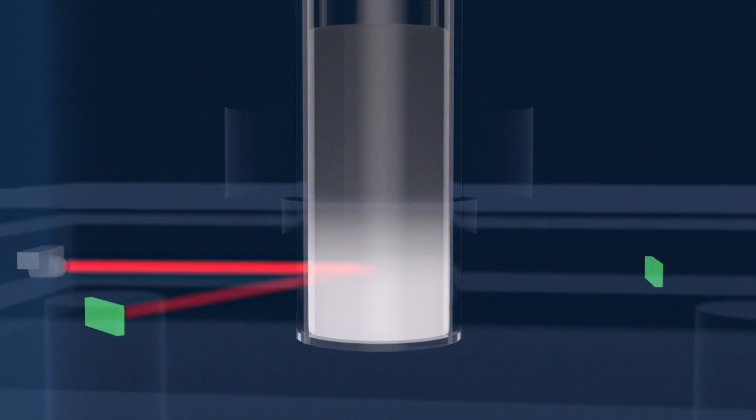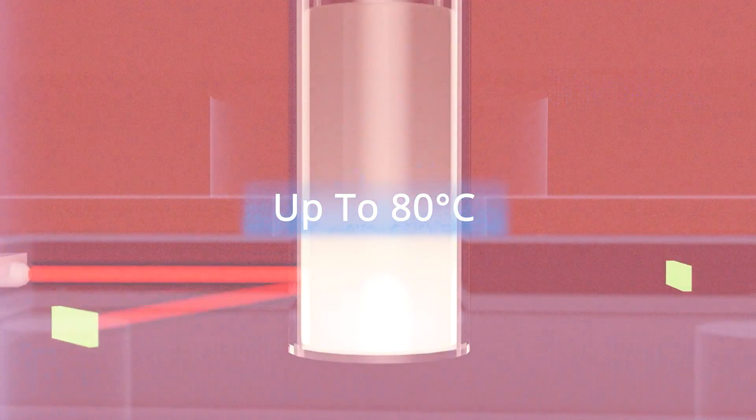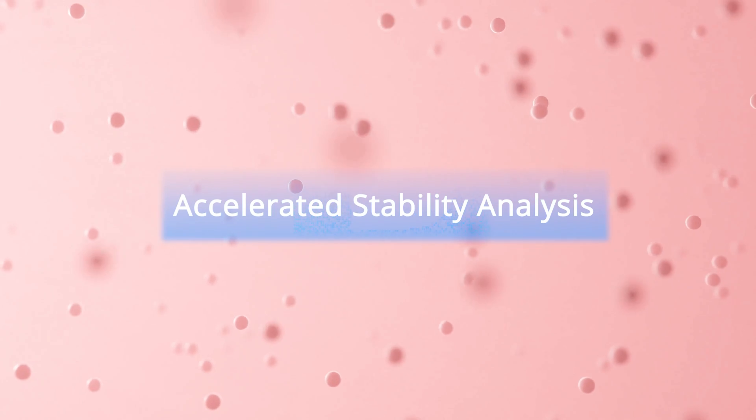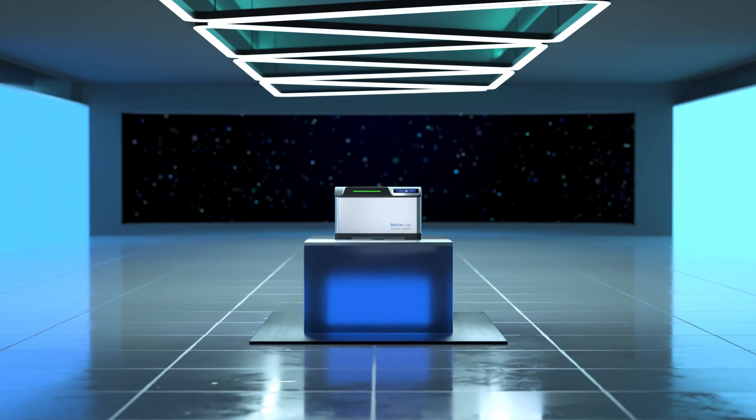Bscan Lab simulates real-world conditions with a temperature range of up to 80 degrees centigrade, allowing for accelerated stability analysis and ensuring optimal product performance under diverse environmental conditions.